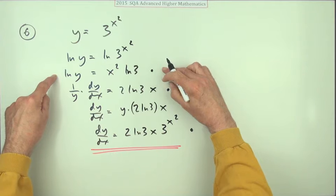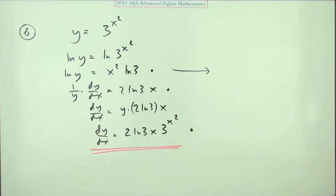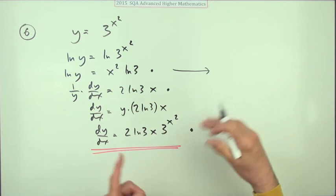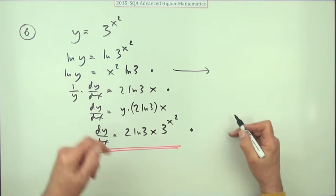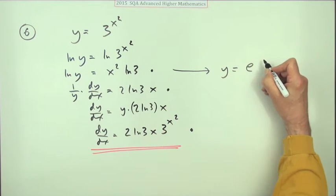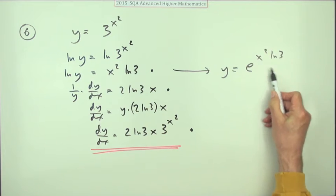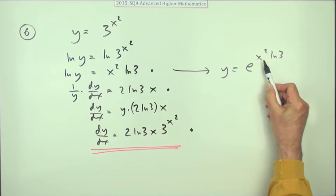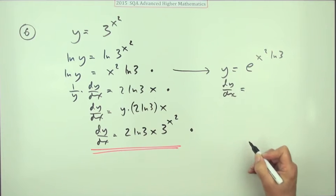You can pop that down, then produce this other expression just by now removing the logarithm, just by doing the inverse. So you've got y equals, so on this side it'll be e to the power of that whole thing, x squared ln 3. And remembering of course that is just a number of x squared.